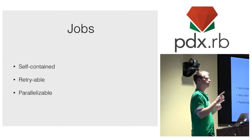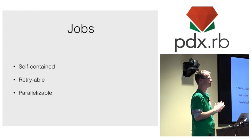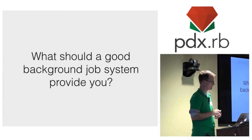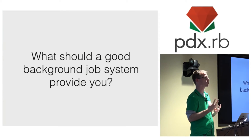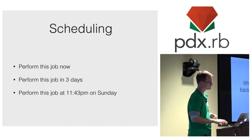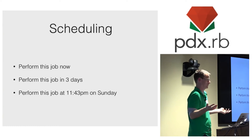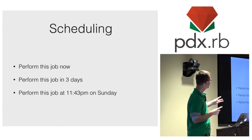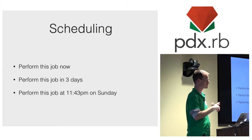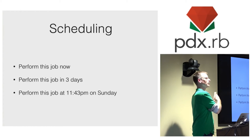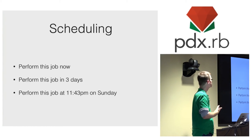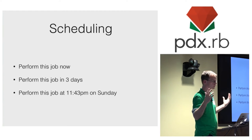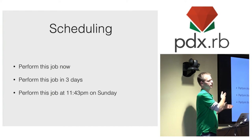What should a background job system provide you? I came up with four key traits. The most fundamental is the ability to create background jobs — you need to be able to schedule work. There are three use cases: execute this job right now, execute this job at some relative time in the future like a day from this point, or at a specific instance in time like 11:43pm on Sunday. When you're building an application, you'll find use cases for all three. For instance, a new user signs up and you want to send them an email in three days saying thanks for coming to the website.